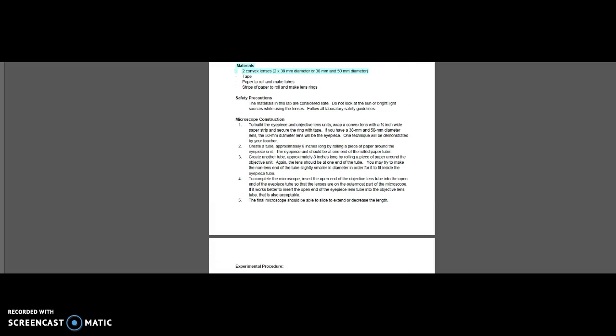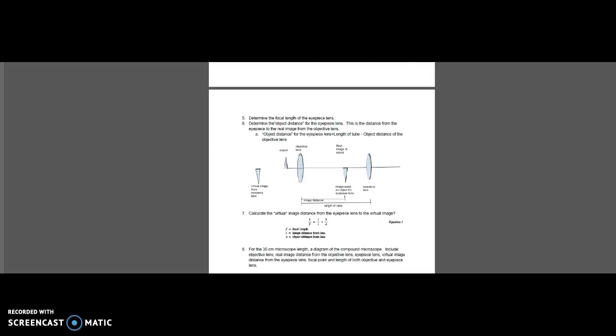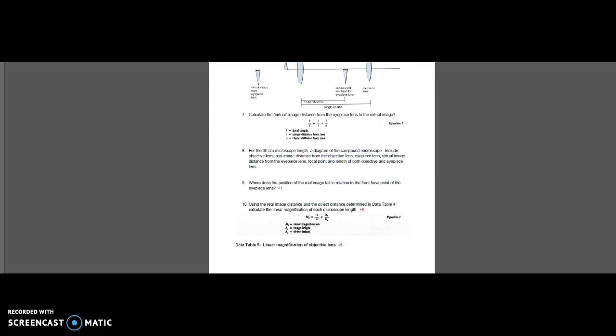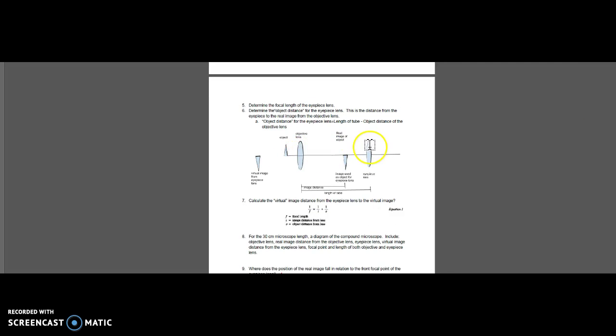In part 2 or the compound microscope, you found your object distance of three different lengths of your microscope and you put that data in table 3. And in number 7, you would have calculated the object distance based on the difference of your microscope length to your real image.